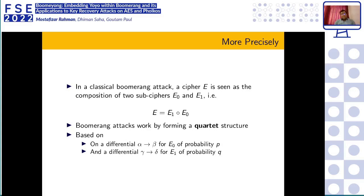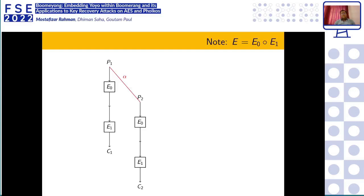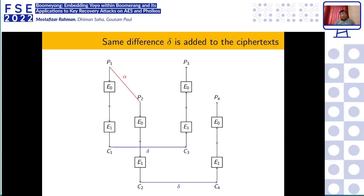For the E0 part, suppose there is a differential with probability p from α to β, and for the E1 part there is a differential from γ to δ with probability q. Over the whole cipher we try to find a quartet structure. We start with P1, P2 and obtain P3 and P4 satisfying certain properties. Initially we start with a pair of plaintexts P1 and P2 with difference α, encrypt them to obtain C1 and C2, then add the δ difference to both C1 and C2 to obtain C3 and C4, and decrypt to obtain P3 and P4.